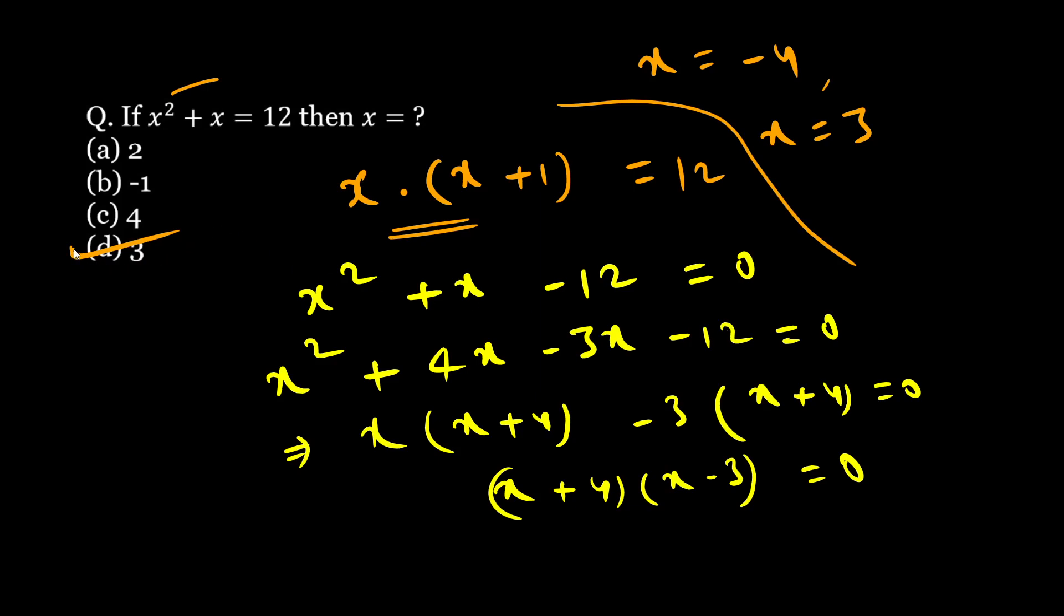But since here we have a multiple choice question, obviously they will give only one option to it. So that's why they have excluded minus 4. But the complete solution is this: you have two solutions, x equal to minus 4 and x equal to 3.